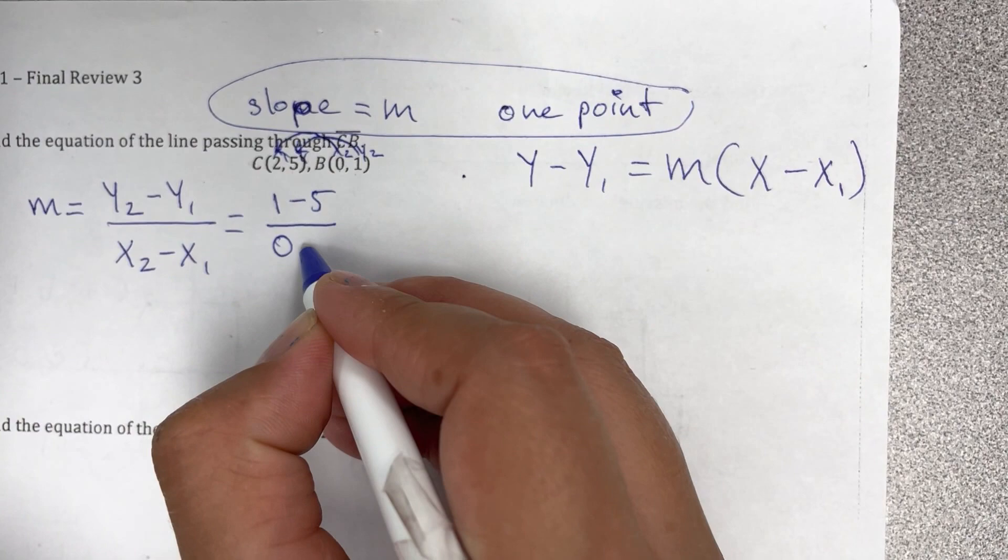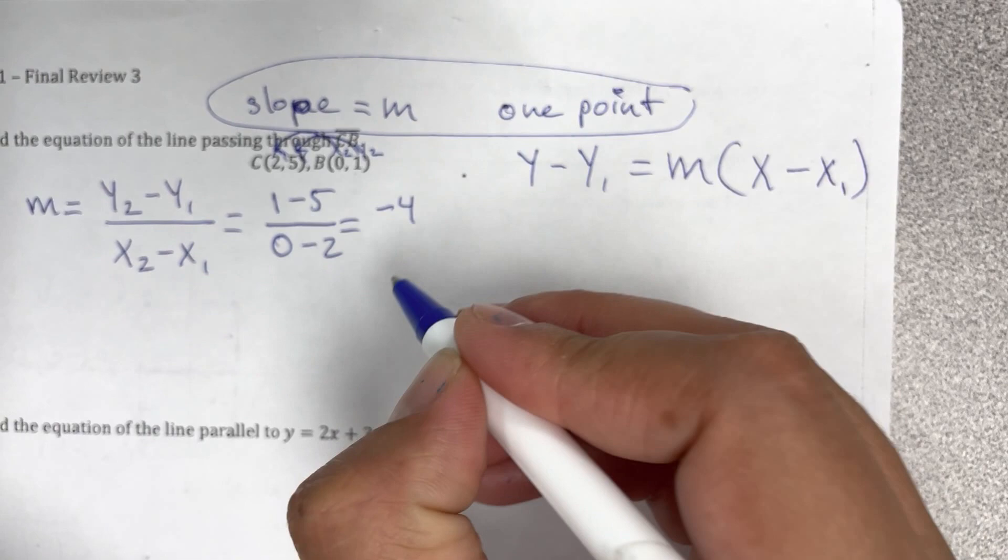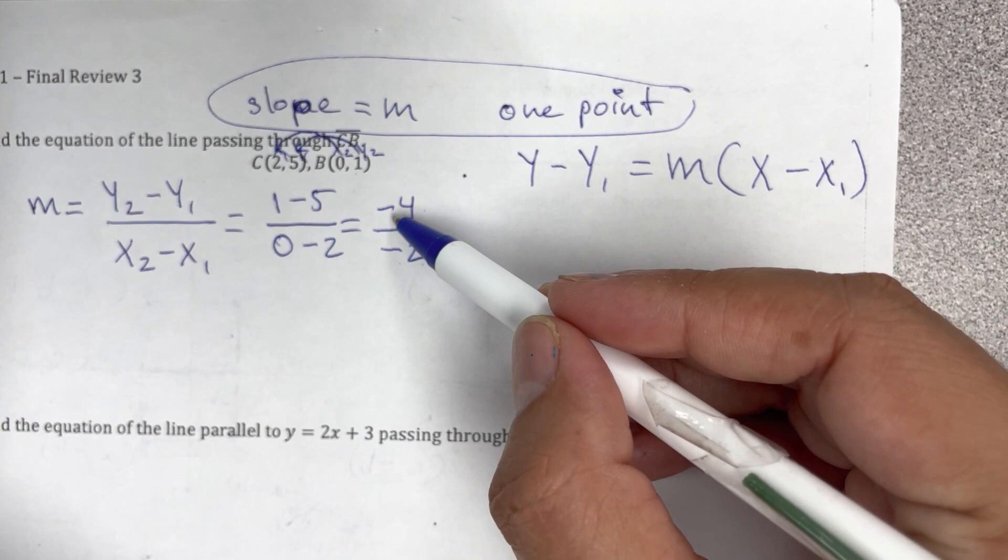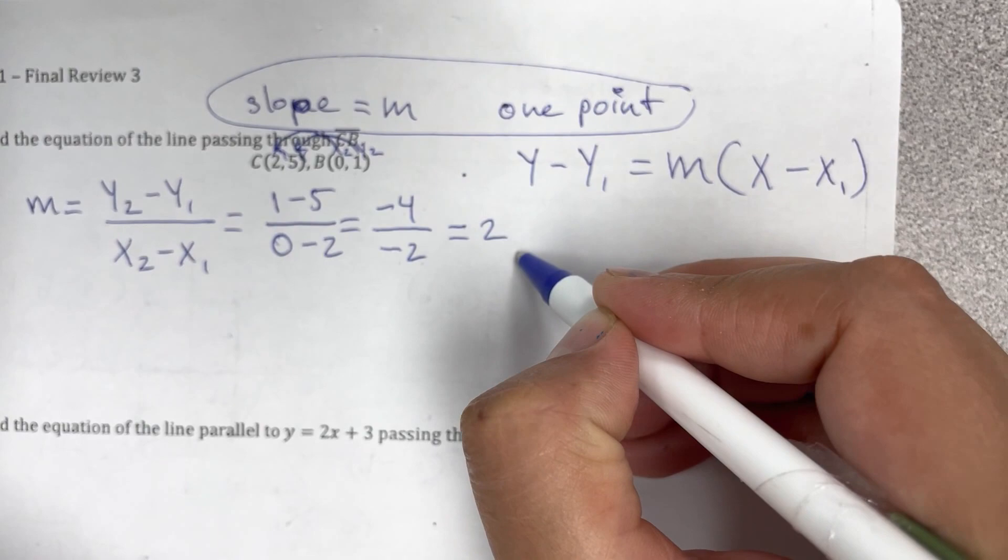So it's minus 5 is negative 4, 0 minus 2 is negative 2. Aquí sí se puede simplificar el signo y también se puede dividir. We can divide the numbers. So negative 4 divided by negative 2 is going to be 2. So that's going to be the slope that I'm going to be using.